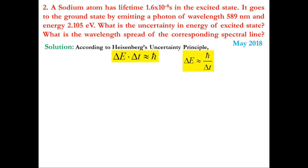For minimum uncertainty, we replace ħ with ħ/2 on the right-hand side, giving ΔE = ħ/(2Δt). Here ħ = 1.054×10⁻³⁴ J·s, as calculated in the previous example.